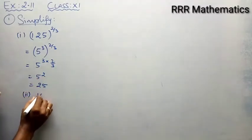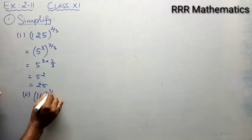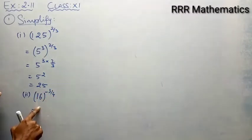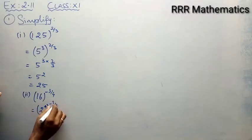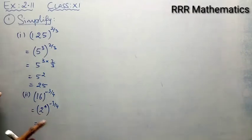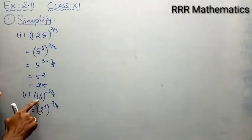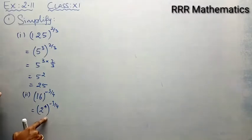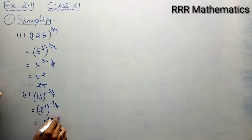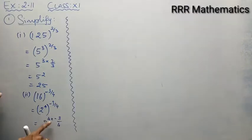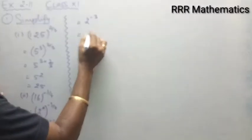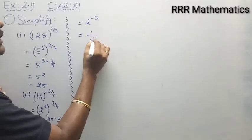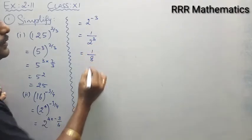Second problem. We have 16 whole power minus 3 by 4. Here the base is 16. 16 can be written as 2 power 4, because 2 × 2 = 4, 4 × 2 = 8, 8 × 2 = 16. So from prime factorization, 16 = 2⁴. By using the property I can multiply the powers: 2 power 4 × (−3/4). The 4s cancel, giving 2 power minus 3. When it comes to the denominator, it will be 1 by 2 power 3, which gives 1/8.